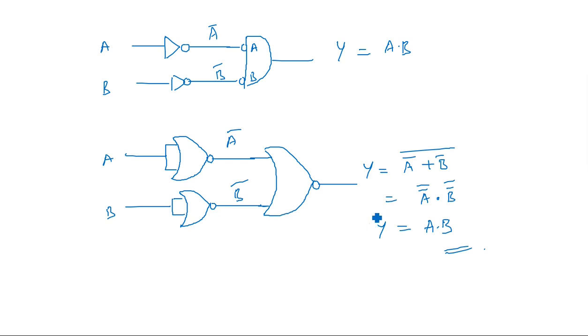So an AND gate can be converted into NOR gates using two NOT gates followed by one NOR gate — three NOR gates total. The NOT gates use common-input NOR gates.